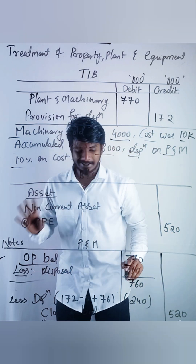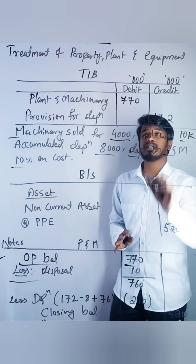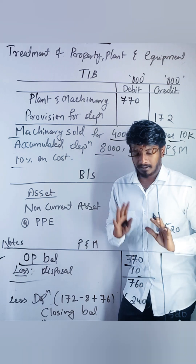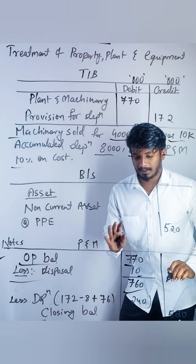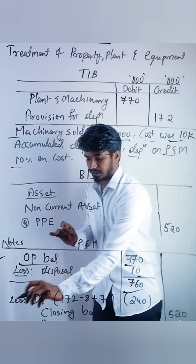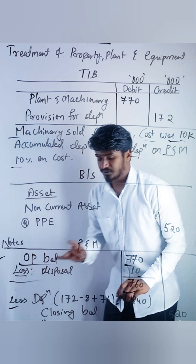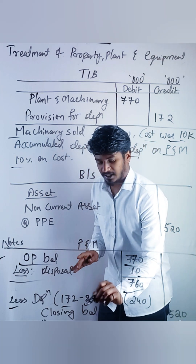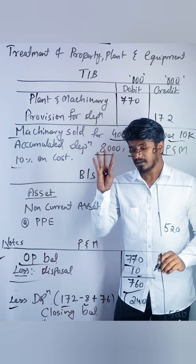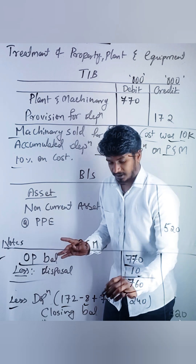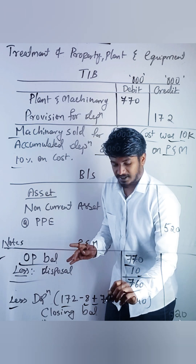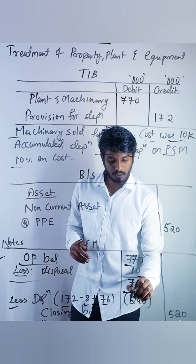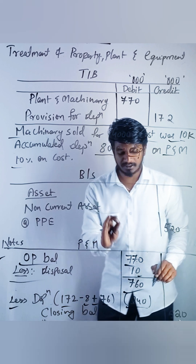Less disposal, which is the cost of the machinery 10, giving 760. Plus depreciation 172 from the trial balance, minus 8,000 from the adjustment, and plus 10 percent on 760. Total depreciation is 240.